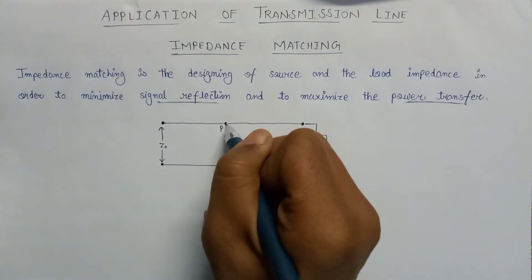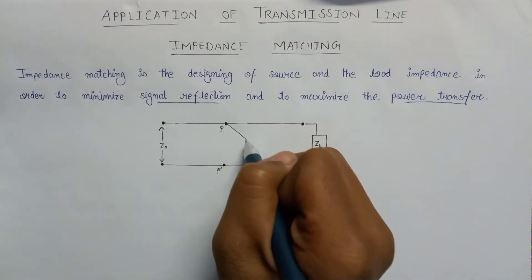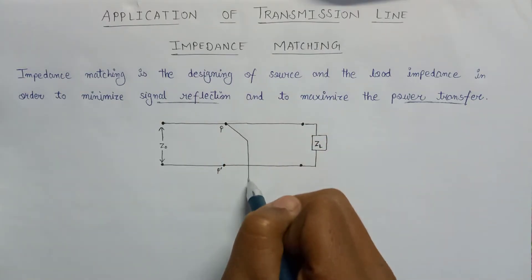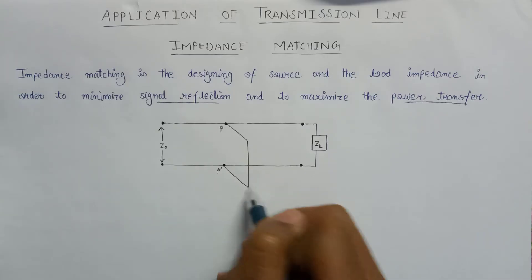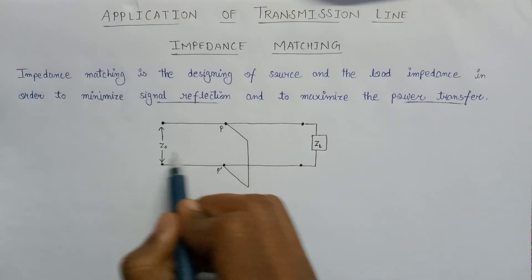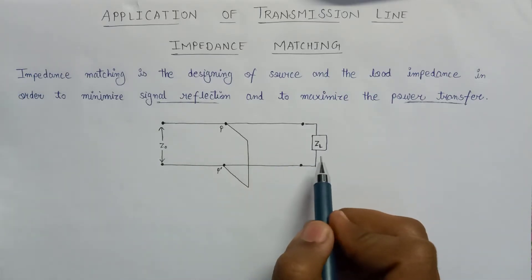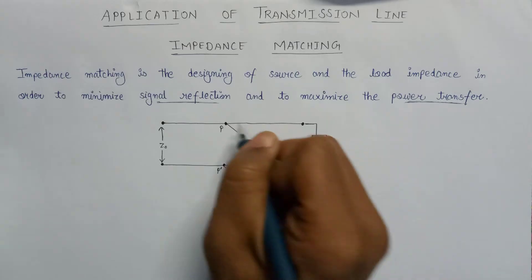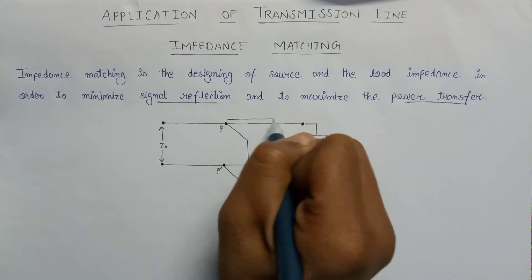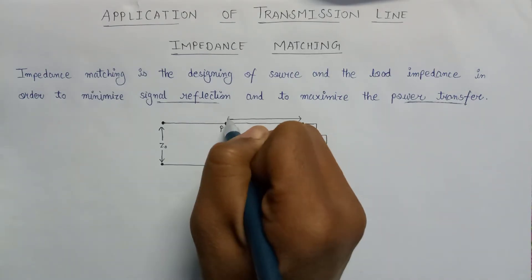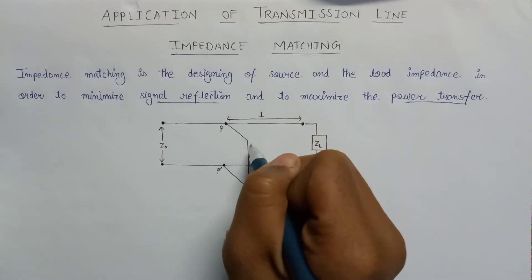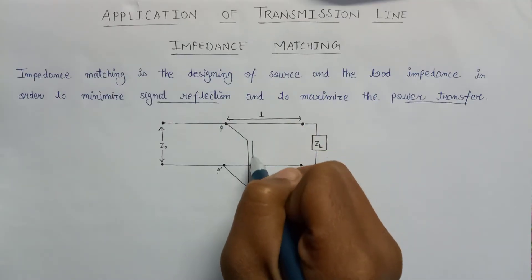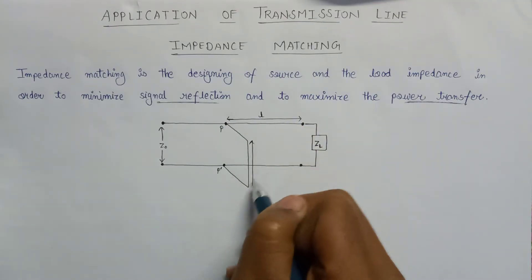Here is a stub that is used for matching the source and load impedance. The distance between point P and the load impedance is equal to L, and the length of this stub is equal to L'.